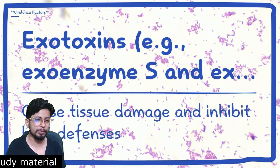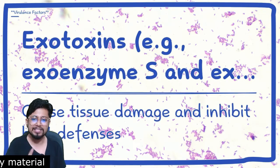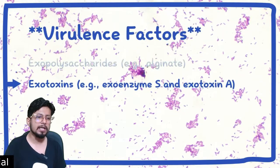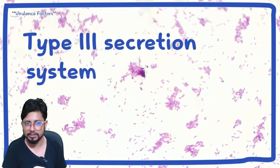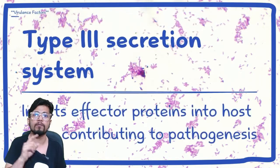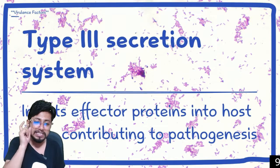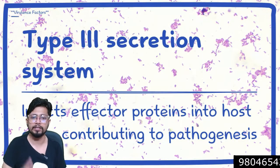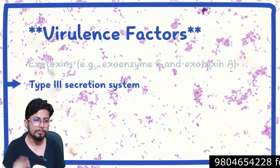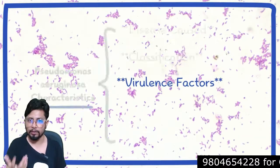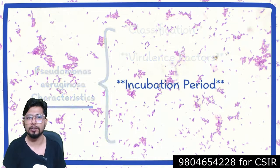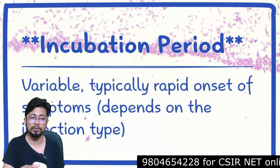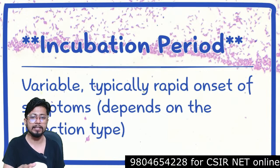The next virulence factor is exotoxins — it produces exotoxins such as exoenzymes. Both can cause tissue damage and inhibit host defenses. Additionally, Pseudomonas aeruginosa uses the type 3 secretion system to inject effector proteins into the host cell, contributing to pathogenesis.